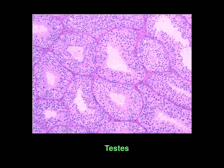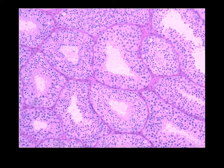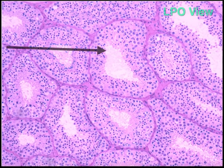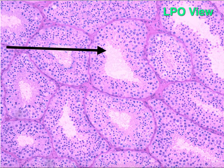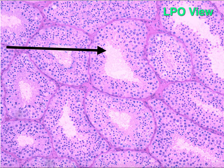The first slide is the testis. Each testis is formed by convoluted tubules called seminiferous tubules, seen in multiple cross sections as shown by the arrow. The human testicular parenchyma contains several important structures. Spermatozoa is produced in the germinal epithelium of the seminiferous tubules and released into the lumina of these ducts.